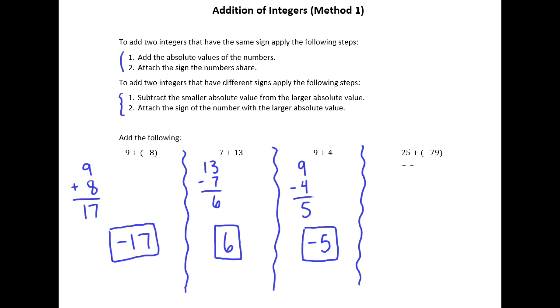One last example: 25 plus negative 79. Again, the signs are different. We have a positive plus a negative. So we're going to subtract. Ignore that negative on the 79 for a second. Take away 25. This gives us a difference of 54. And the negative is with the bigger absolute value, so our answer is negative 54.